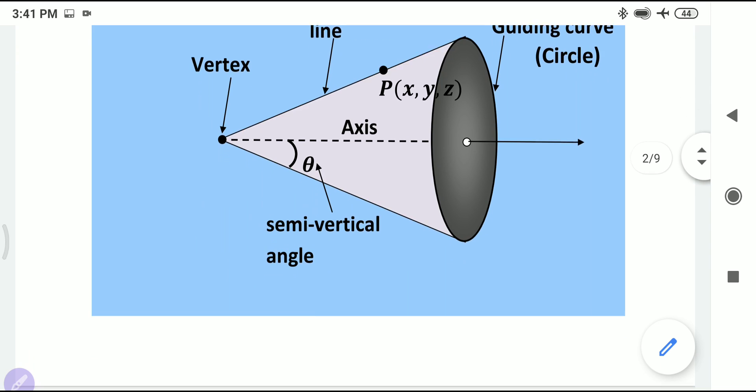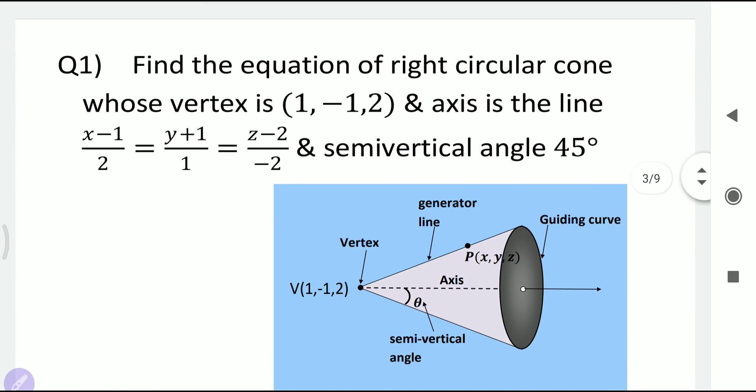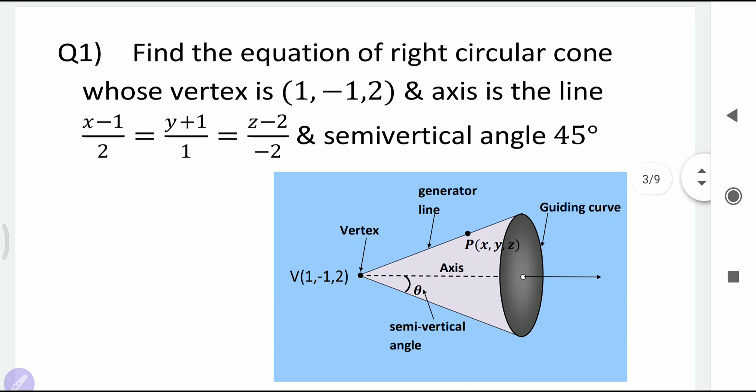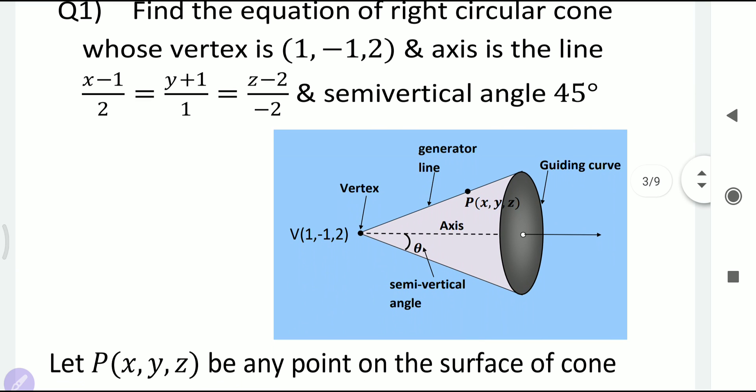Let's start with the first problem: find the equation of the right circular cone whose vertex is (1, −1, 2), whose axis is the line (x−1)/2 = (y+1)/1 = (z−2)/(−2), and whose semi-vertical angle is 45°. Remember, while solving problems of right circular cone you need three things: the vertex, the DRs of the axis, and the semi-vertical angle theta.